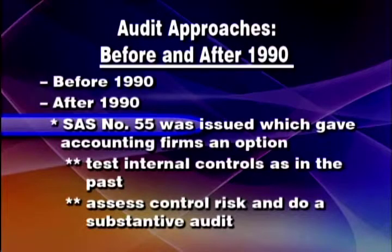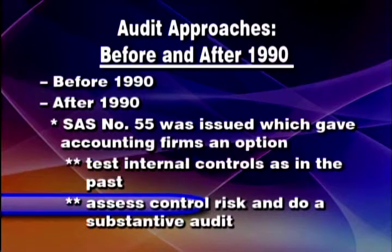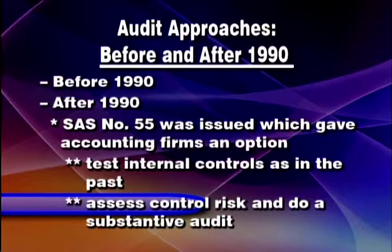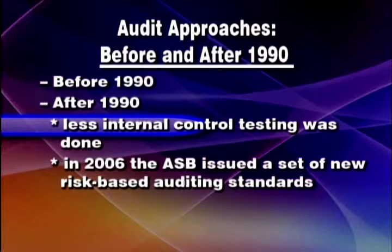So the Auditing Standards Board took a look at that issue and decided to give accounting firms an option. They could test controls, as they had been doing in the past, or they could assess control risk at the maximum, which would suggest that we're not going to test controls and we don't really have to understand controls very well. We would go do a substantive audit — substantive audit being third-party evidence gathering for the most part. So pre-1990 we did a fair amount of internal control testing; post-1990, we did very little internal control testing.